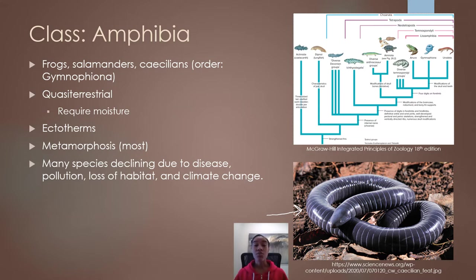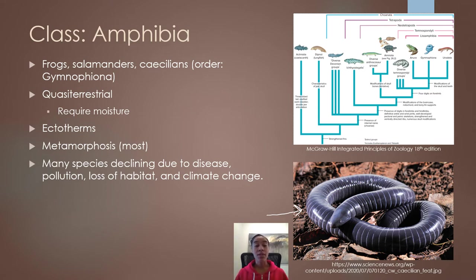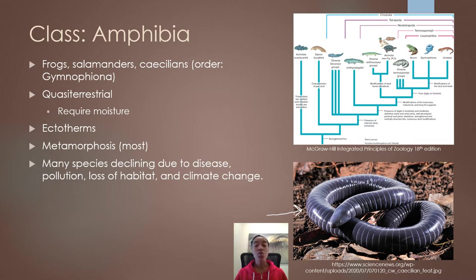All amphibians are ectotherms, which means they do not have internal ways of regulating their body temperature and must rely on environmental conditions to do so. They'll spend more or less time in the sun to increase or decrease their body temperature appropriately. Most amphibians undergo metamorphosis, going from an egg to some sort of larva, then a juvenile, and then to an adult form. The different life stages of amphibians tend to vary in morphology and habits quite greatly.